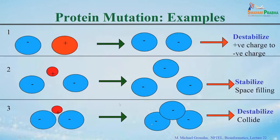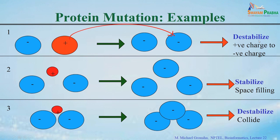I show some examples. There is a negatively charged residue and a positively charged residue — if they are close to each other, they can make ion pairs. If you mutate the positive charge to a negative charge, then both residues become negatively charged and they make a repulsive interaction. In this case, they may destabilize the particular protein.